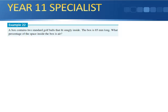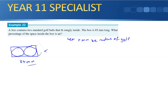Example 22, a box contains two standard golf balls that fit snugly inside the box. The box is 85 millimetres long. What percentage of the space inside the box is air? So I'll draw my box, I'll only draw a side view here. There we go there, we've got one ball, which, of course, you would assume that it's touching, and the other ball, which you would assume is touching as well. And it does say that the box is 85 millimetres in length. Of course, if you're looking at it from the side, you're only going to see one ball from this side, but remember, it is a box, so it's got a whole area like that.